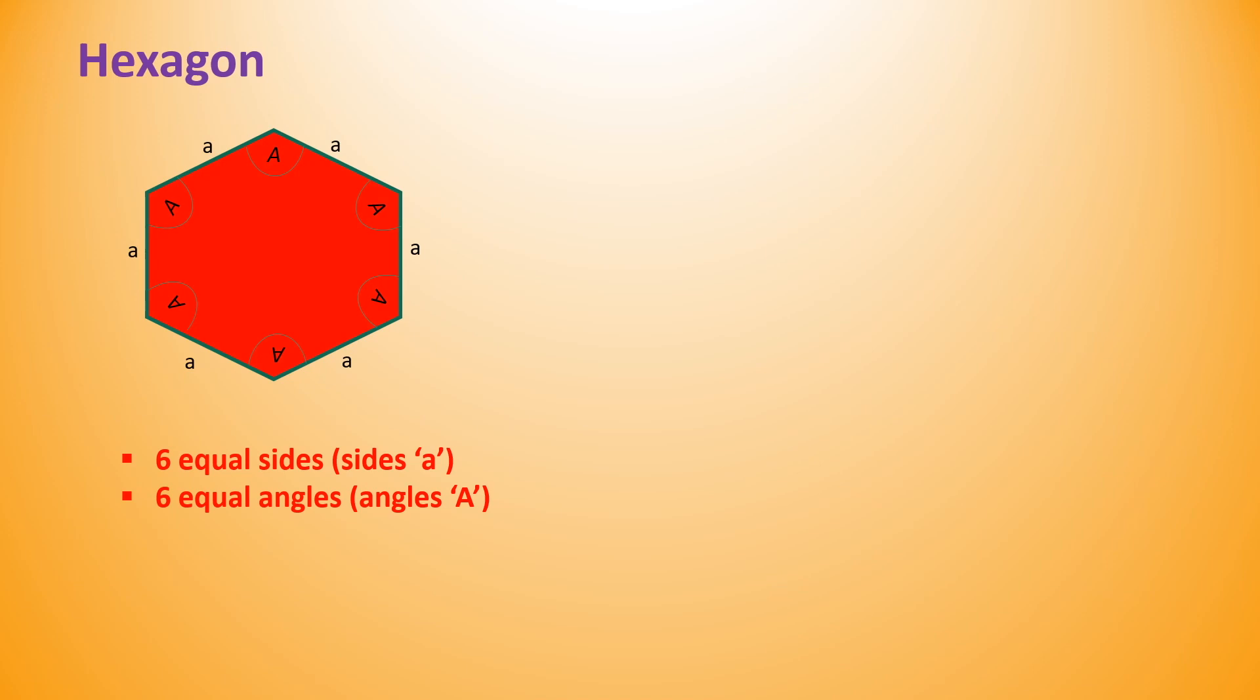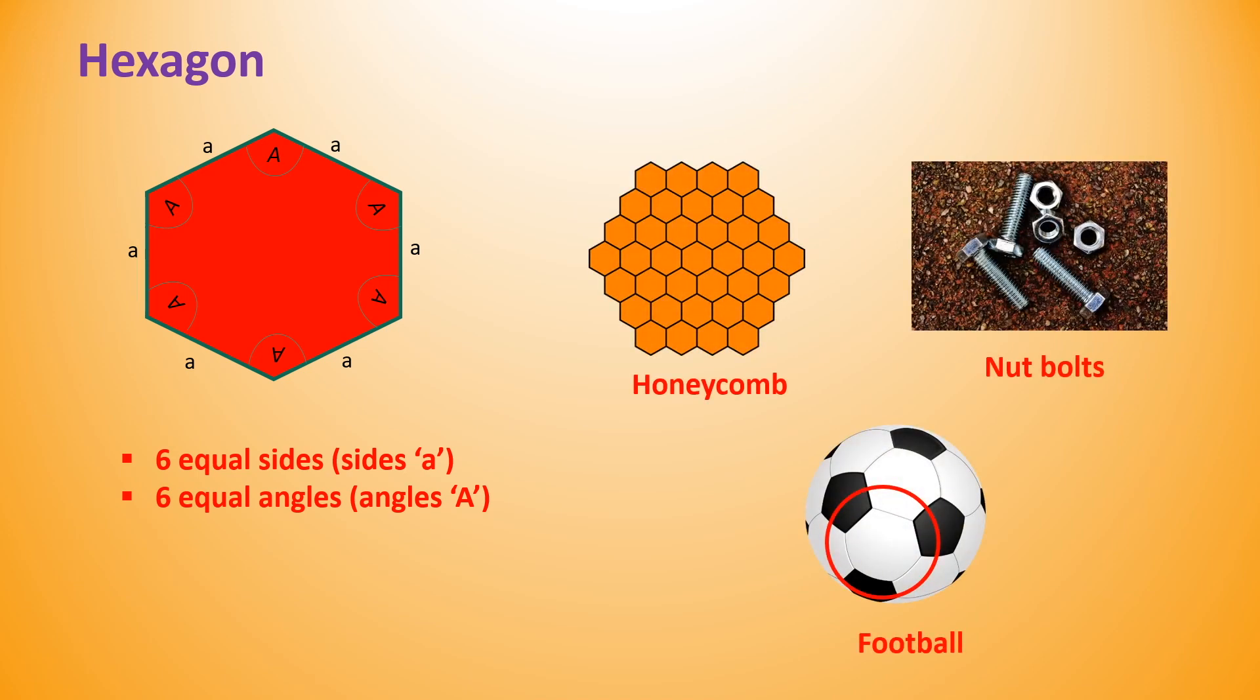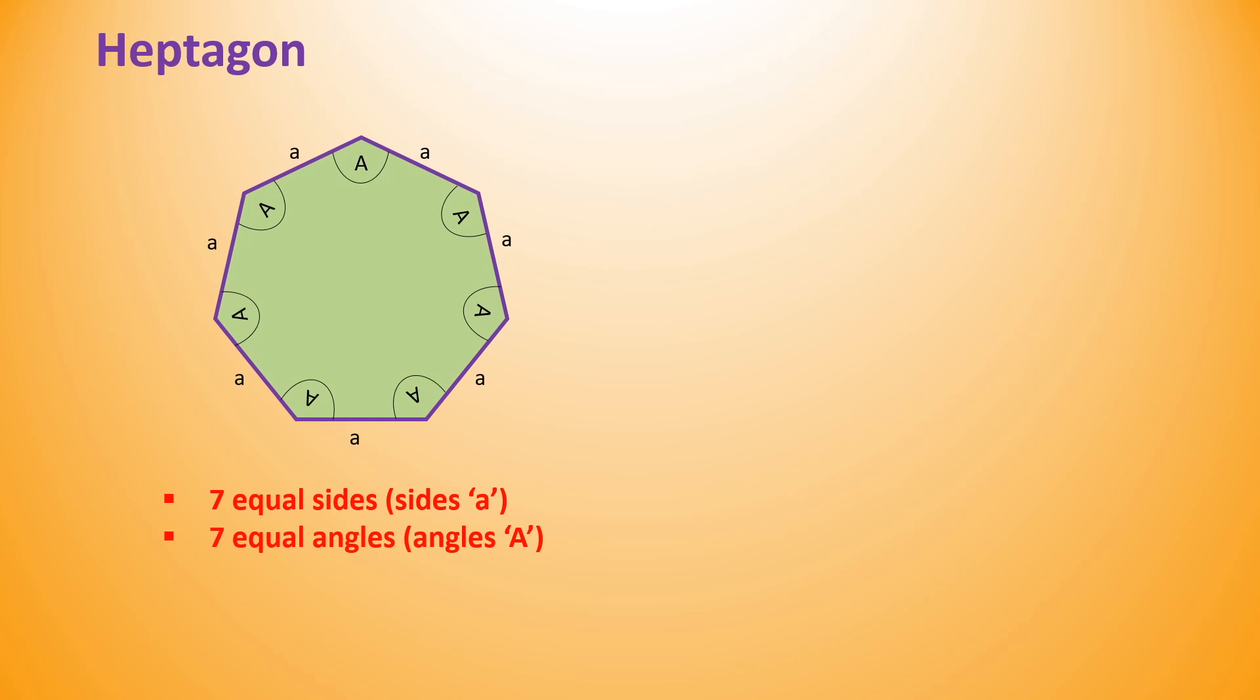Hexagon has six equal sides and six equal angles. This hexagon shape we can observe in various objects.